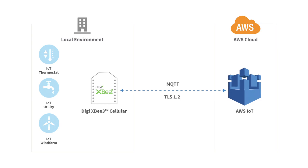For the server, we'll be using Amazon Web Services' Internet of Things platform, or AWS. To connect to the server, there needs to be an endpoint address to aim at the DigiXP3 modem. The AWS IoT platform also has the added benefit of a built-in MQTT broker, meaning it's equipped to handle incoming MQTT messages and send them out to clients that are subscribed to the topics.